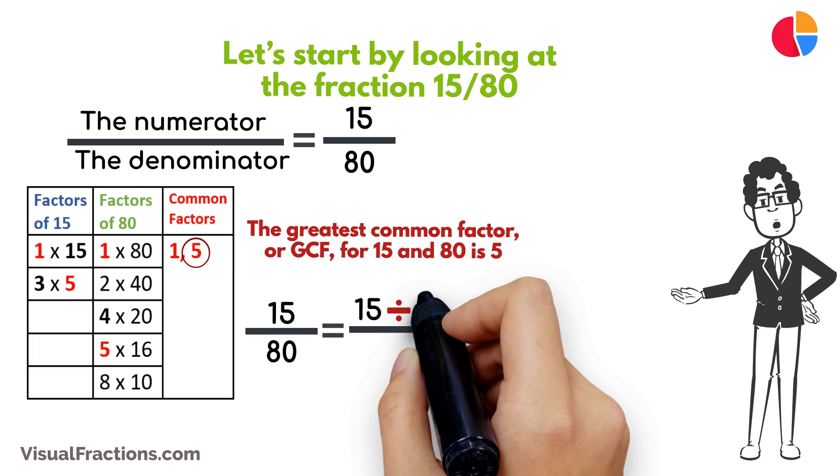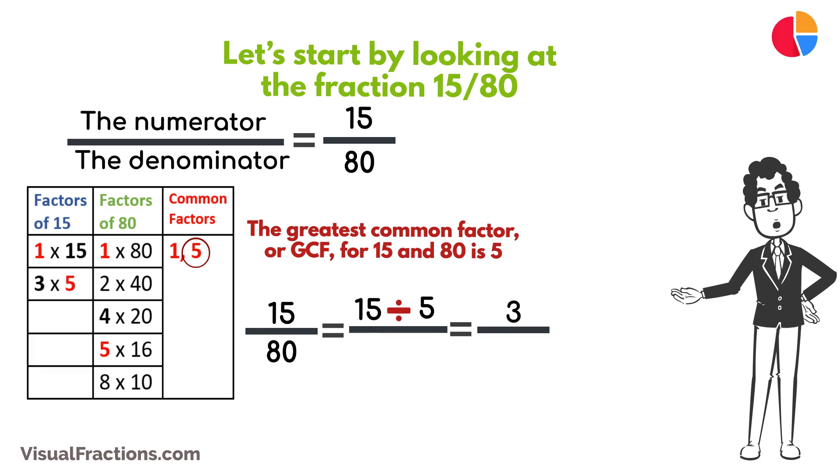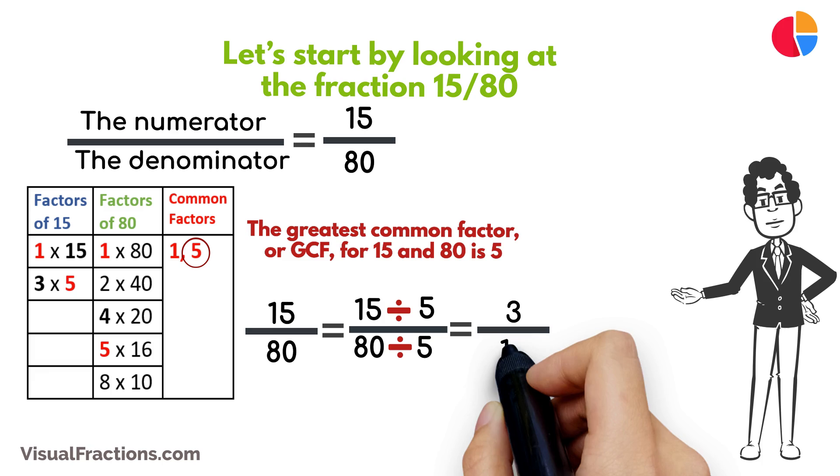We start by dividing 15 by 5, which gives us 3. Then we divide 80 by 5, which results in 16.